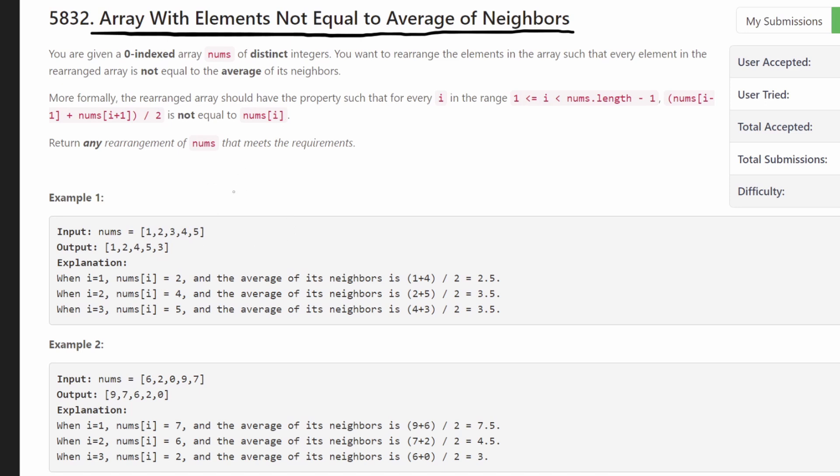Well, a brute force approach would be to take every single permutation of the input array nums and then find one that works. Well, that's going to be n factorial roughly. That's going to be the time complexity. Question is, can we do better? And the answer is yes.